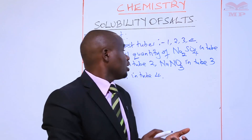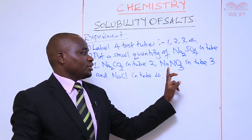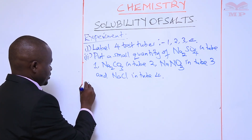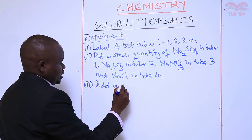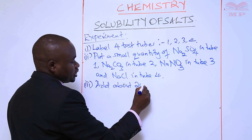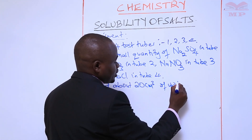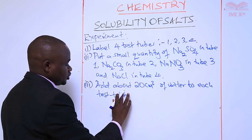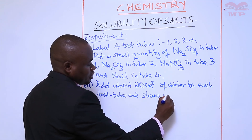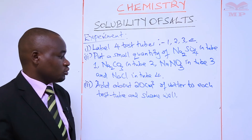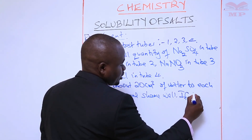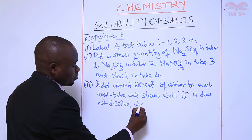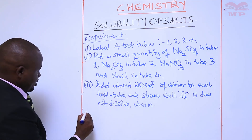So you take the first test tube and put sodium sulfate, the second test tube you put sodium carbonate, the third test tube you put sodium nitrate, and the fourth test tube you put sodium chloride. Then add about 20 cubic centimeters of water to each test tube and shake well to make sure that the salt dissolves. If it does not dissolve, you apply a source of heat by warming the mixture.